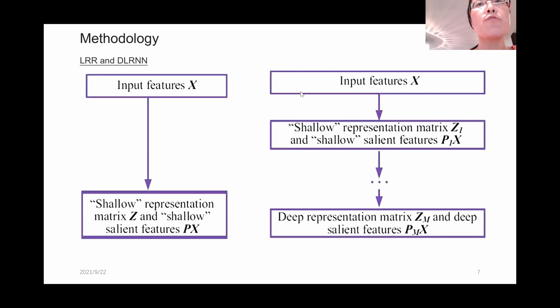Here we use the flowchart to show the difference of the low-rank representation and the deep latent low-rank representation. In the general low-rank representation, we use the first layer's matrix Z and the salient features PX directly to do classification or segmentation, any kind of work.